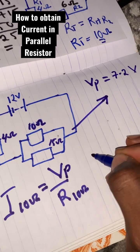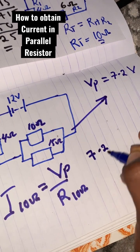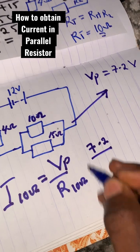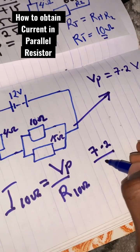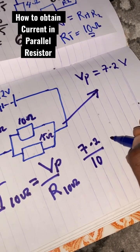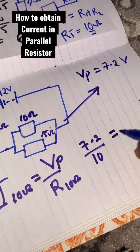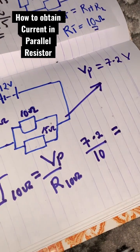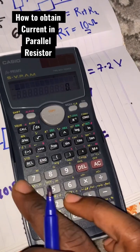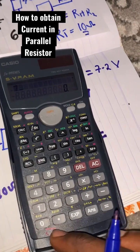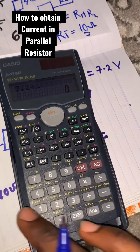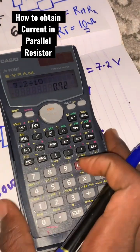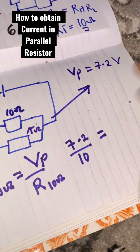The current through the 10-ohm resistor equals the parallel voltage 7.2V divided by the resistance of 10 ohms, which gives us 7.2 divided by 10 — a value of 0.72 amperes.